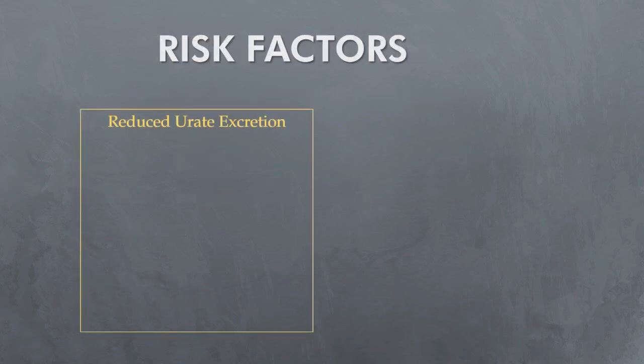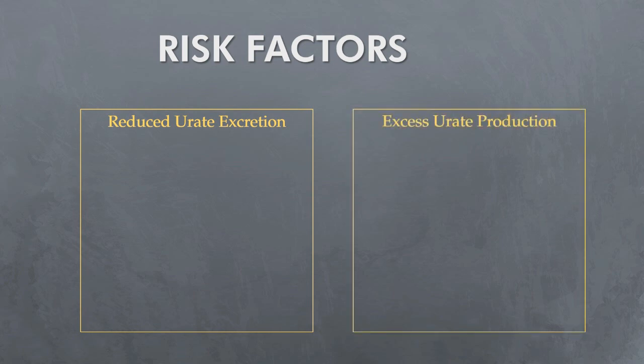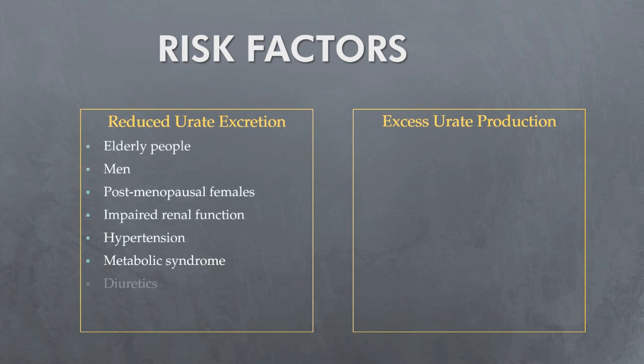Risk factors can be categorized into two groups: reduced urate excretion and excessive urate production. Reduced urate excretion occurs in elderly people, men, postmenopausal females, those with impaired renal function, hypertension, metabolic syndrome, diuretics, certain antihypertensives, and aspirin.